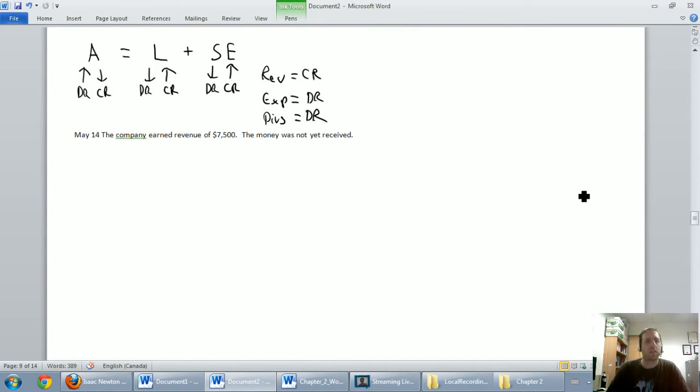May 14th, the company earned revenue of $7,500, the money was not yet received. So in answer to the question I'm always asking, did money change hands? The answer is no, there's no cash involved here. Well, I can deal with the first part of this pretty easily. We earned revenue.